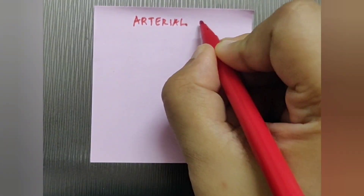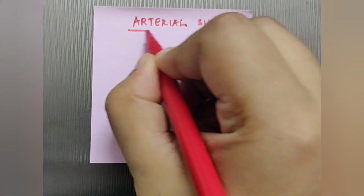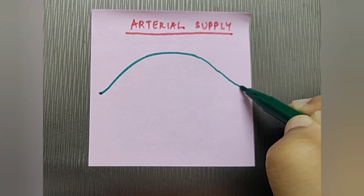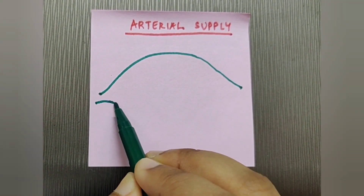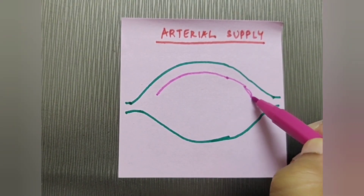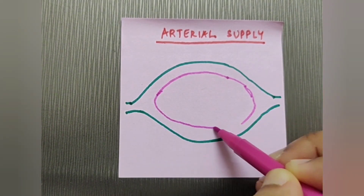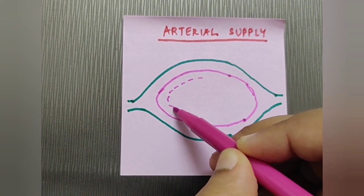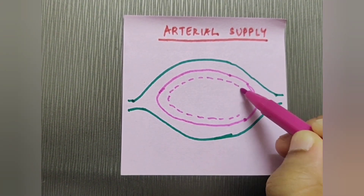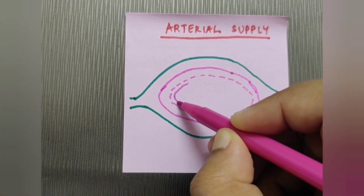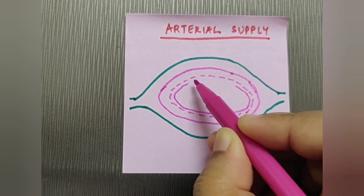I'm drawing a transverse section of the body of the uterus to show the branches of the uterine artery. I'm drawing all the layers: the perimetrium, the myometrium, and then the inner endometrium.